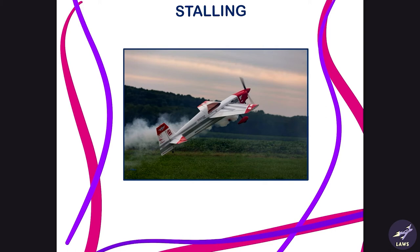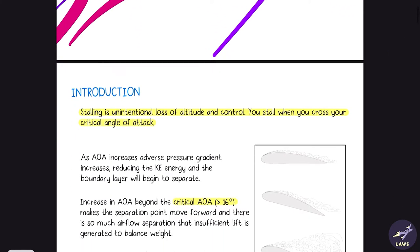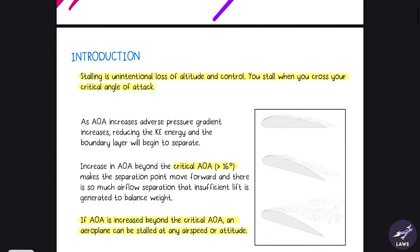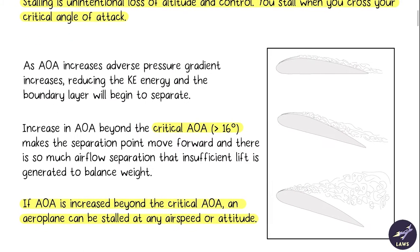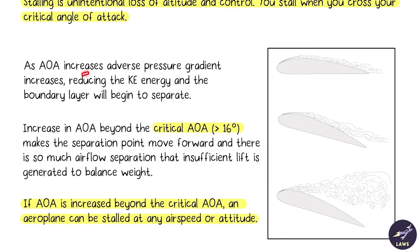Today we'll be doing stalling. Stalling is the unintentional loss of altitude and control. You stall when you cross your critical angle of attack, which is around 16 degrees. As you increase the angle of attack, the adverse pressure gradient increases.